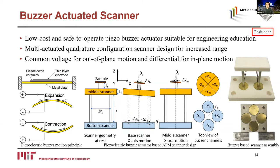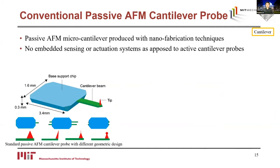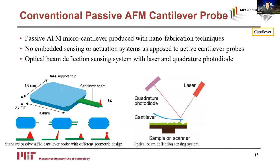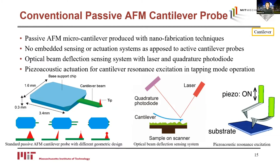Now let's take a look at the cantilever probes. Conventional AFM systems use passive cantilever probes produced with nanofabrication techniques. The probe is composed of a base support chip, a cantilever beam, and the probe tip. Multiple cantilevers and various chip geometries can be produced for different applications. To measure cantilever deflection, an optical beam deflection system is typically used — a laser is shined on the reflective coating surface of the cantilever and reflected onto a photodiode, allowing nanoscale resolution measurement. However, a transparent path for the laser is required. For dynamic mode operation, piezo actuators in the cantilever probe holder acoustically excite the cantilever resonance, but accurate control of the cantilever deflection is not possible in opaque liquid environments.